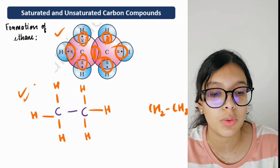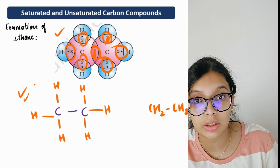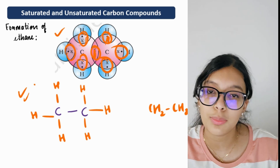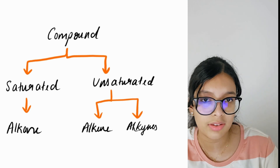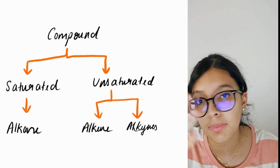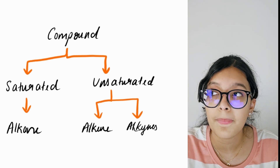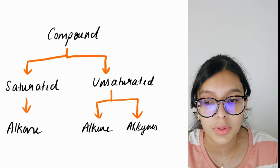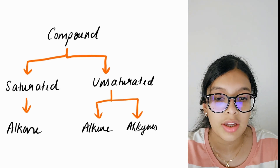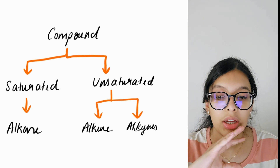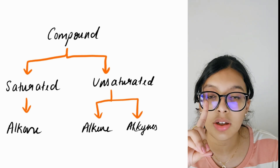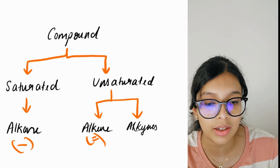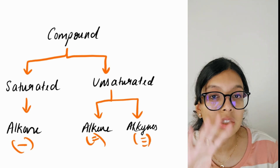In a compound it can be of two types: saturated means single bond, and unsaturated means double or triple bond. Under saturated compounds we have alkanes. Under unsaturated compounds we have alkenes (double bond) and alkynes (triple bond). Alkane — single bond; alkene — double bond; alkyne — triple bond. Each has its own structural format and naming.